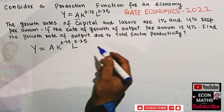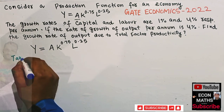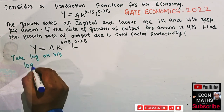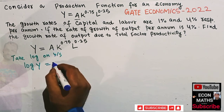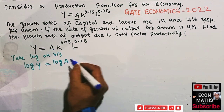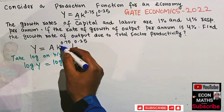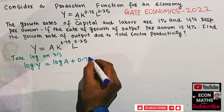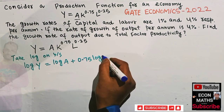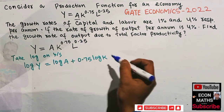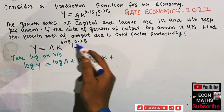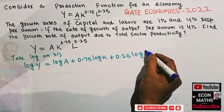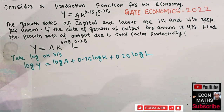To solve this question, we take log on both sides. So we have: log y = log A + 0.75 log K + 0.25 log L. Here, the exponent 0.75 becomes a coefficient by the law of logarithms, and similarly 0.25 becomes the coefficient of log L. Now we take the total differential on both sides.